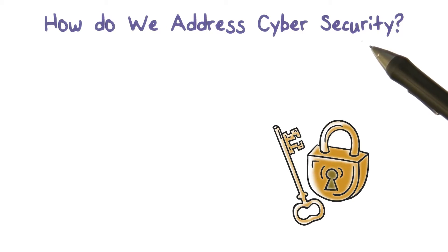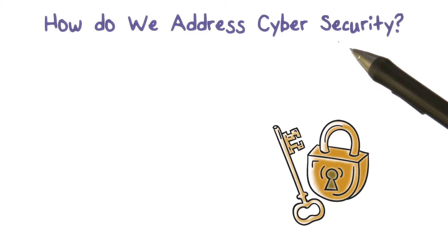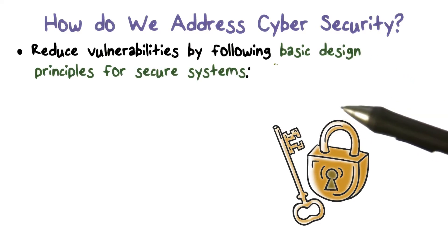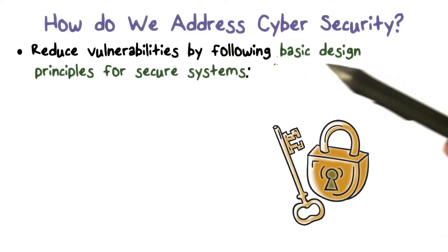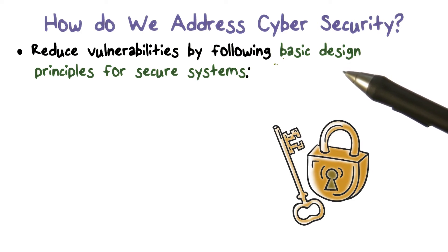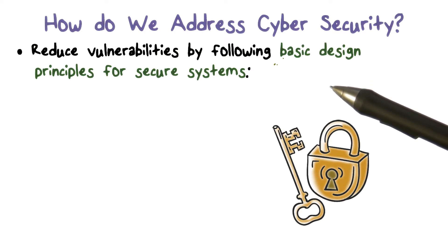What is it that we should be doing to address cybersecurity? How is the task of securing our system going to be addressed? What are the things available to us? One way to reduce vulnerability is by following design principles that are good for security. When systems are more secure, there are fewer vulnerabilities and they are less likely to be compromised.